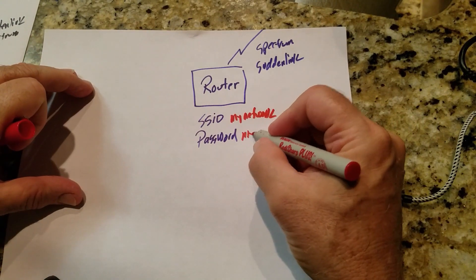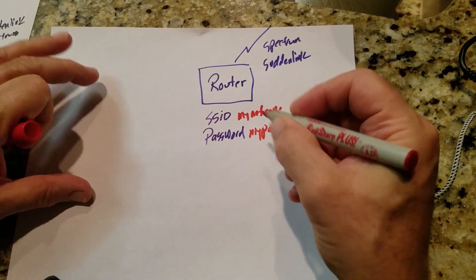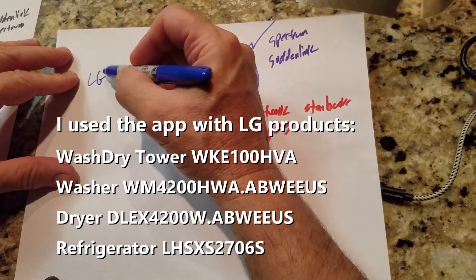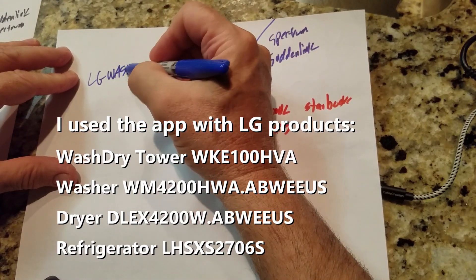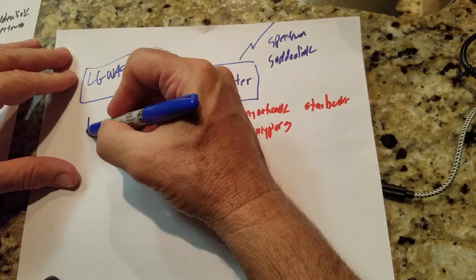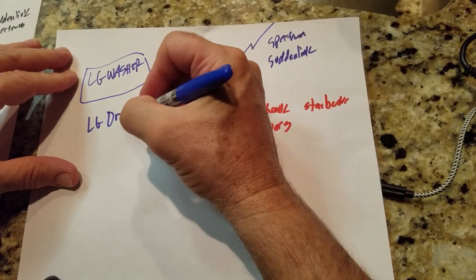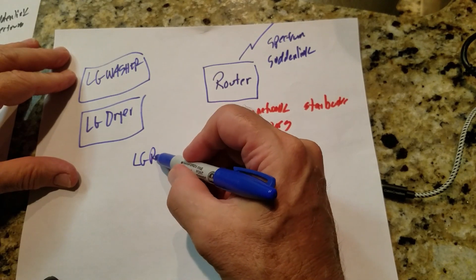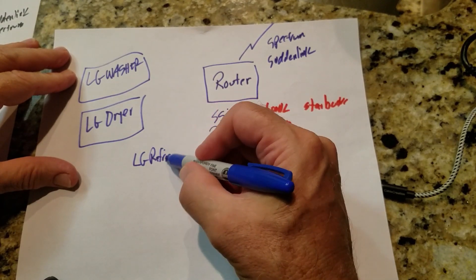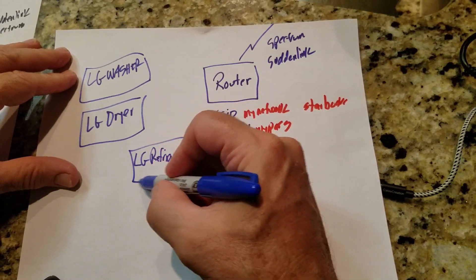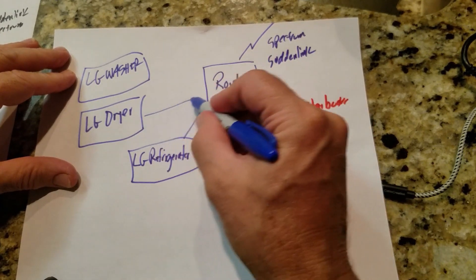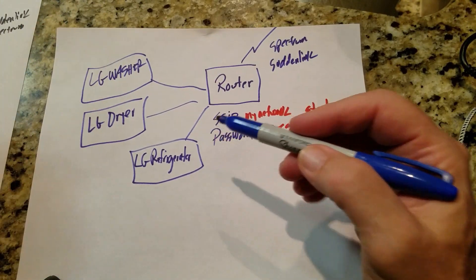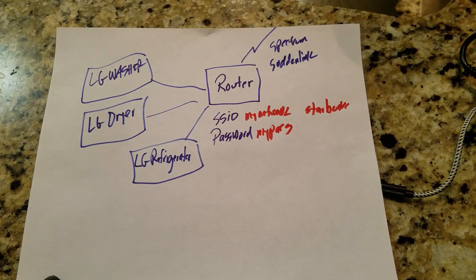Of course they also have a password — something like 'my password.' When you have your appliances, your LG washer, LG dryer, LG fridge, they all have to connect to your router so they can do their updates, you can order things, and they can send you messages on the status.